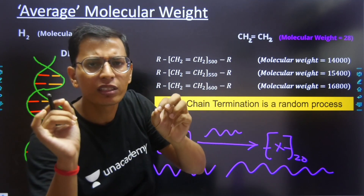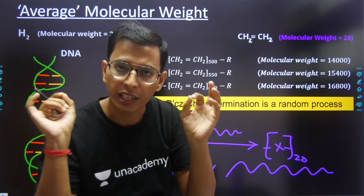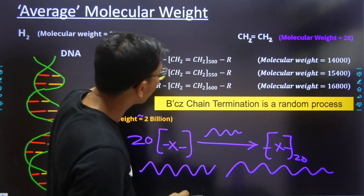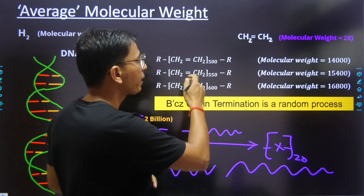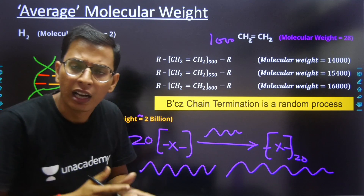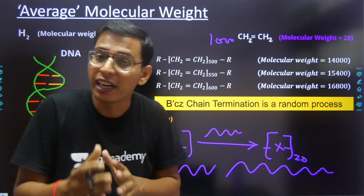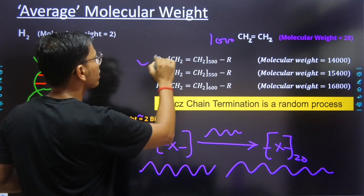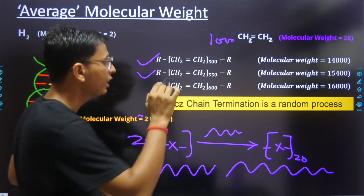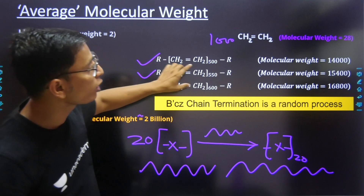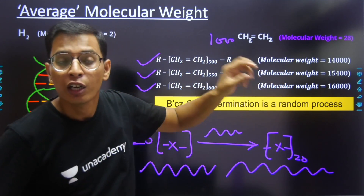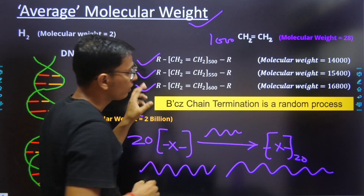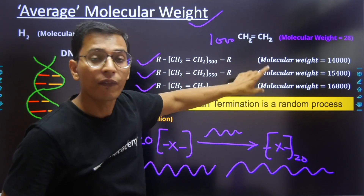For example, if you have an ethylene monomer, its molecular weight is 28. Now if you start polymerization and you have 1000 ethylene monomer units, 100% conversion is not possible in the case of addition polymerization. What normally happens: if you have 500 units converted, you will get a polymer chain, and another chain, and multiple chains. So in polymerization reactions, we consider the average molecular weight — we take the average of the molecular weight of every chain.